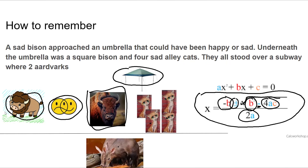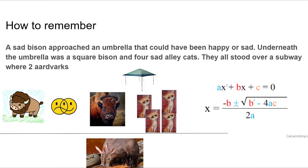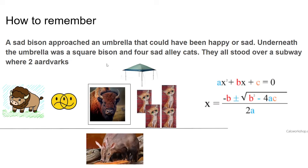It just depends on how you remember things better. If you can remember a very graphic or weird or crazy picture, it helps. These letters refer to the coefficients and the constant: a is the first coefficient, it goes with x squared; b is the coefficient for x; and c is the constant in the equation. Let's get into some problems.